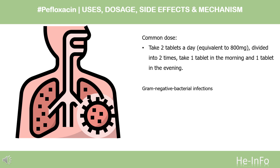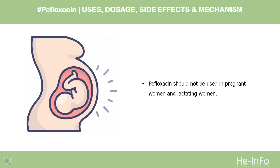In patients older than 65 years, use a dose of one tablet per day, equivalent to 400 mg, divided into two times per day, taking half a tablet of Pafloxacin twice a day. Safety Advice: Pafloxacin should not be used in pregnant women or lactating women. Nervous effects may occur, so patients should be warned not to drive or operate machinery while using Pafloxacin because of possible undesirable effects.